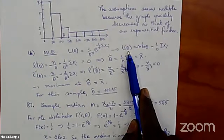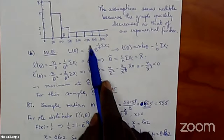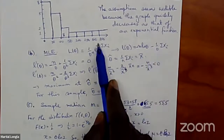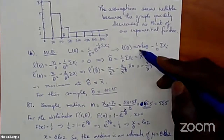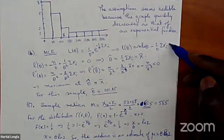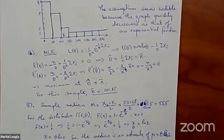When you take the log of the likelihood function, it becomes −n·ln(θ) − (1/θ)·Σxᵢ. That's the log-likelihood function. To find the maximum, take the derivative, set it equal to zero, and solve. Then do the second derivative test: take the second derivative, plug in the critical point, and check that the second derivative is negative — not positive.